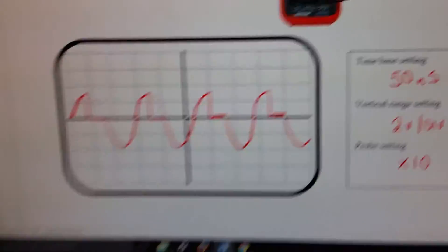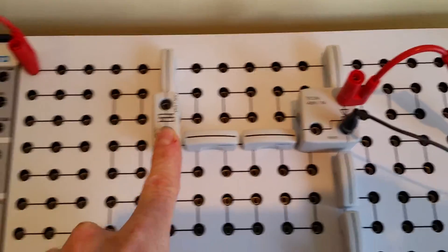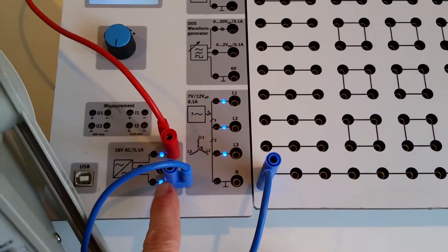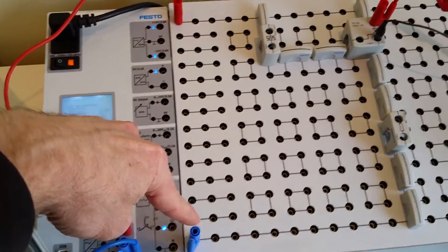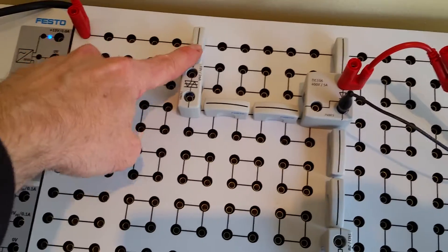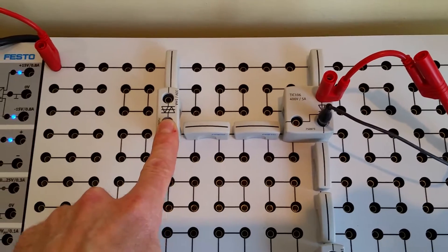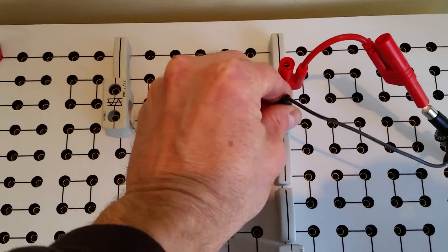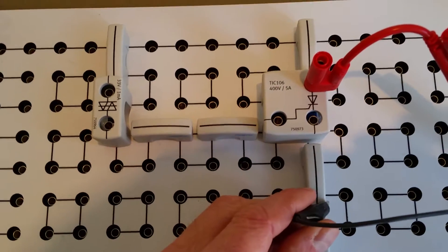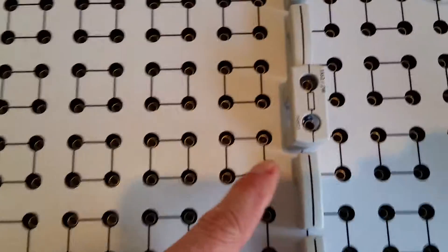We've got the diac right across the source. We're coming from the AC source, so we've got 24 volts between these two points. Voltage is coming into the diac — remember that the diac is like two zener diodes back to back, so it's a voltage-sensitive switch turning on our SCR. The symbol for the SCR is right there: anode, cathode, and gate, going down to our one kilo ohm resistor.